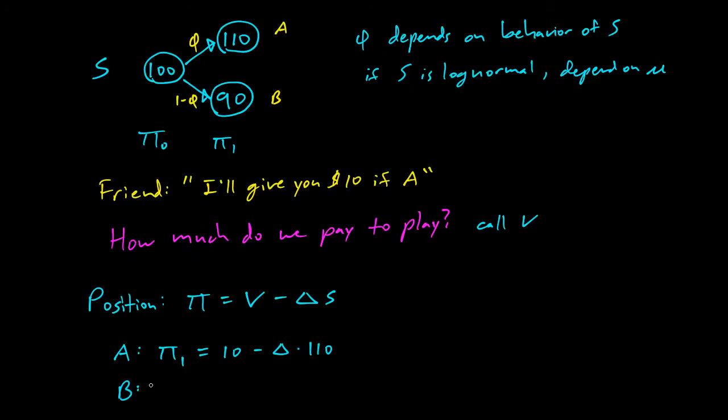And then in B, we have pi_1 equals 0, so we didn't get the $10, minus delta times 90.